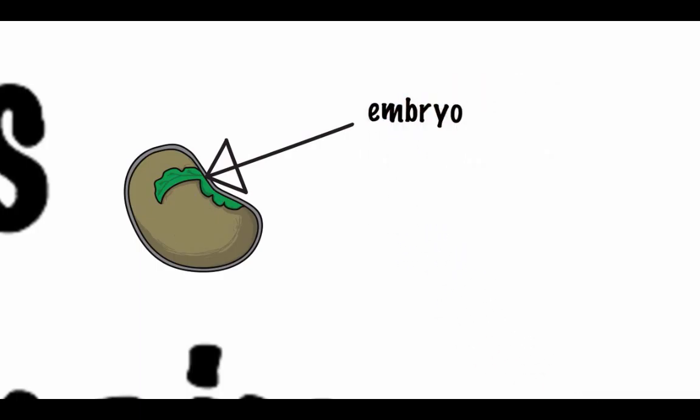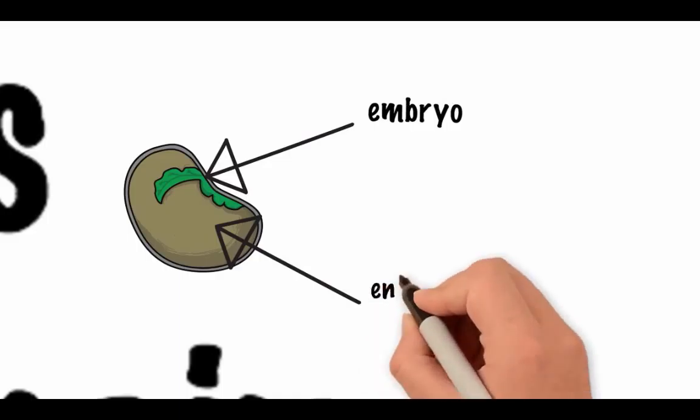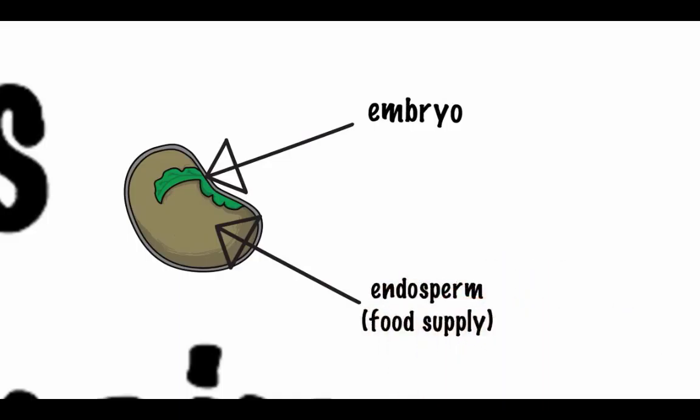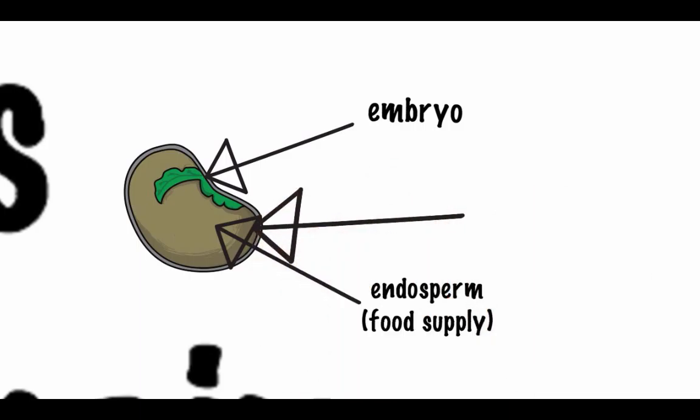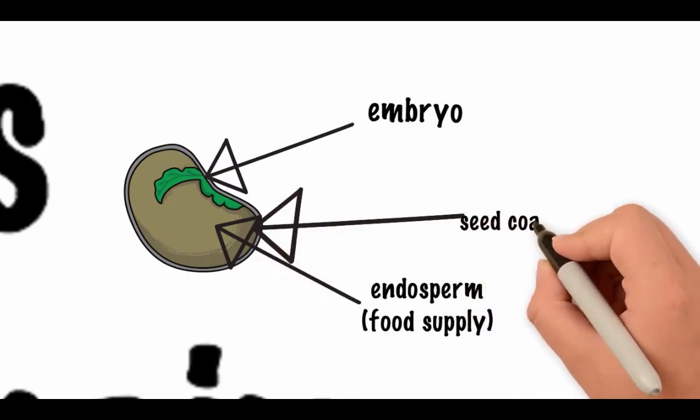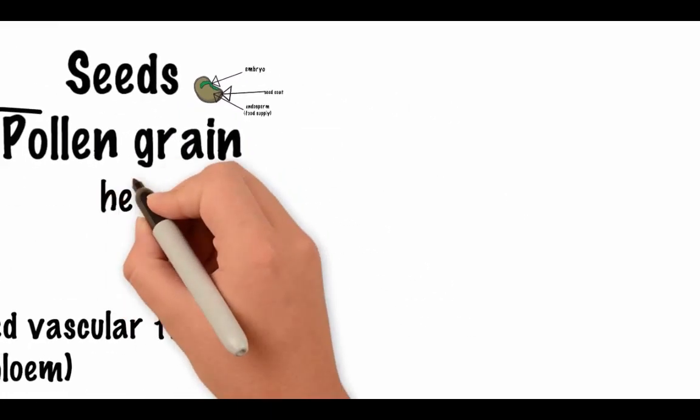The seed, which contains the embryo, the endosperm, which is a nutritive food supply, and a seed coat can remain dormant until conditions for germination are favorable. This helps the plant survive in drier land environments.